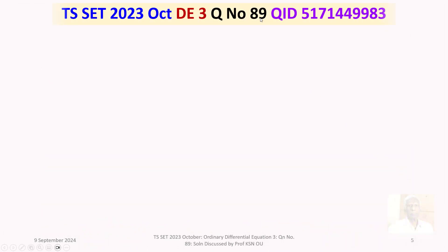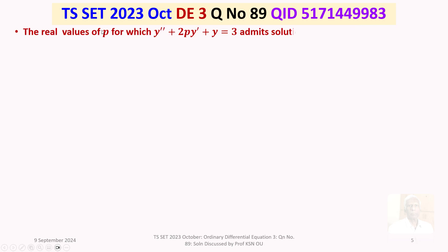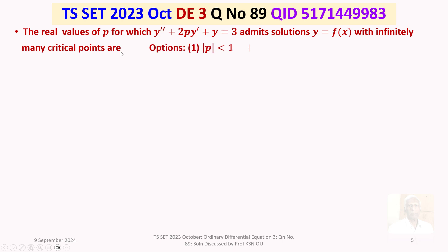Question number 89: find the real values of p for which y'' + 2py' + y = 3 admits solutions y = f(x) with infinitely many critical points. We are given four options: option 1, |p| < 1; option 2, |p| < 2; option 3, |p| > 1; option 4, |p| > 2.